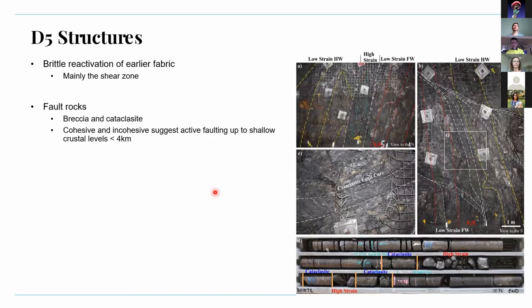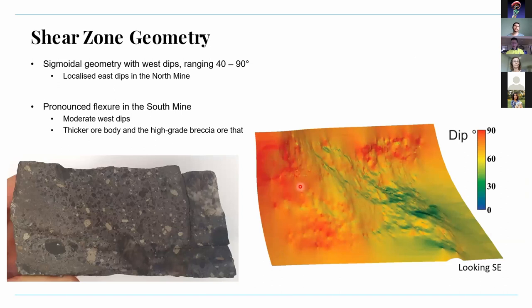The final major event recognized at Dougal River is the reactivation of earlier fabric, mainly the shears. This resulted in the development of fault rocks, and because you have the presence of both cohesive and incohesive versions of breccias and cataclasites, it suggests active faulting to shallow crustal levels. The main thing to point out in this image is the cataclastic fault core — this is the main shear at the mine, going from one side of the drive with a fairly thick high strain zone to the other side, five meters apart, where you have a quite narrow cataclastic fault core.